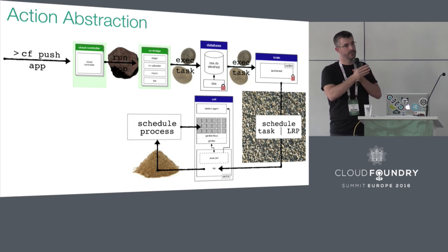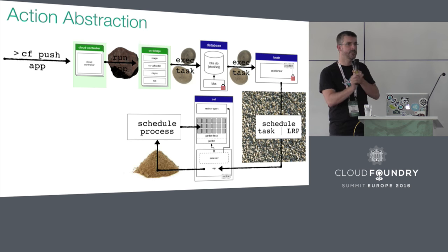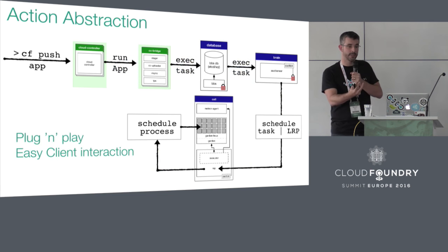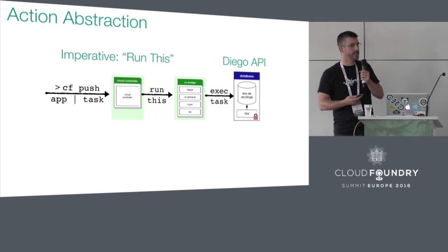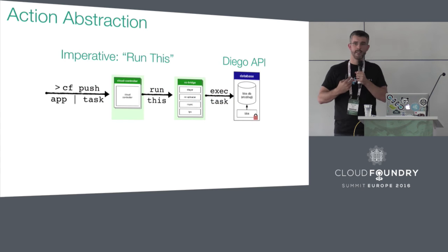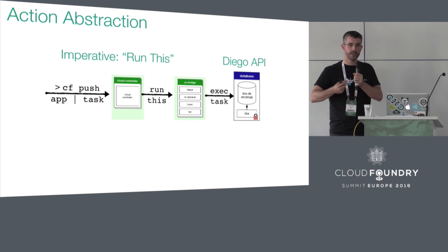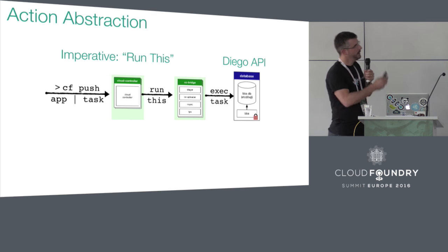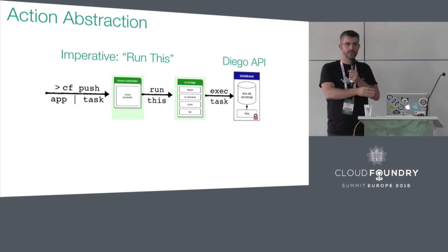If everything within Diego was concerned with this scheduled process, it would be incredibly brittle and complicated for the end user to interact with. By adopting the ability for each component to have its own view of the work and its own abstractions, it allows for a plug-and-play model where you can take things out and replace them, and also allows for really easy, transparent client interaction. As the Cloud Controller interacts with Diego, it's imperative it can say 'run this' and then leave Diego to do its thing. Diego knows about the desired state and tries to rectify the desired state with the actual state. The Cloud Controller has a very specific Cloud Foundry view, while Diego's view is very generic, and the bridge component in the middle allows translation between the two.